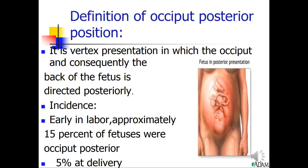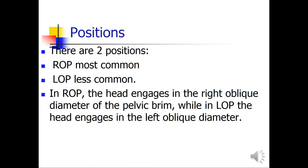The definition of occipital posterior position: it is a vertex presentation in which the occiput, and consequently the back of the fetus, is directed posteriorly. Incidence: early in labor, approximately 15 percent of fetuses are in the occipital posterior position, and only five percent remain so at delivery.